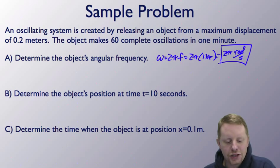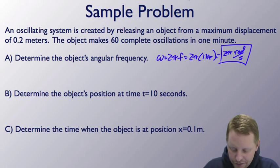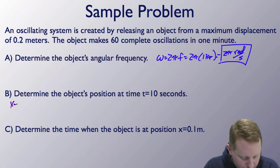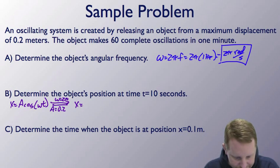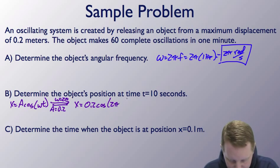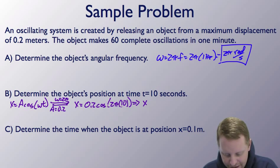Part B, determine the object's position at time t equals 10 seconds. Well, the general form of our equation is going to be x equals a cosine omega t. But we know now that omega is equal to 2π, and we also know that our a is 0.2 meters. So we could write that x is equal to 0.2 times the cosine of 2π times our time, 10 seconds. Well, 2π times 10 is still going to be cosine equivalent to 2π, which is going to be 1. So we'll just get x equals 0.2 at 10 seconds, so 0.2 meters.